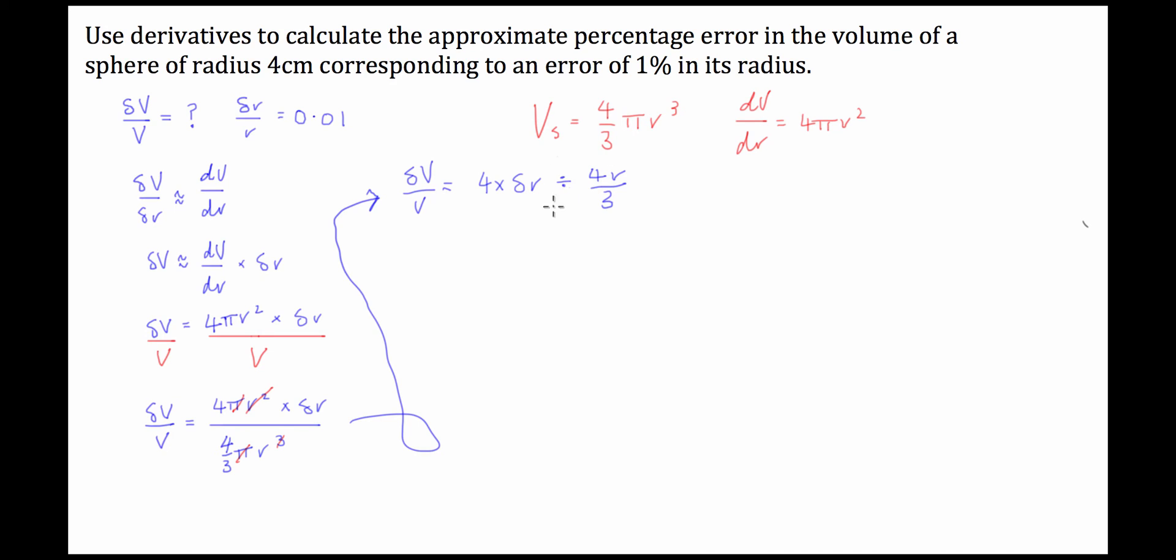So because we can't divide by fractions, this is a little bit of elementary maths, we have to times by its reciprocal. So we're going to have 4 times delta r times by 3 over 4 r. And what's going to happen here is 4 times by something over 4 is going to cancel out the 4's, so what we're left with is delta v over v is equal to 3 times delta r over r.